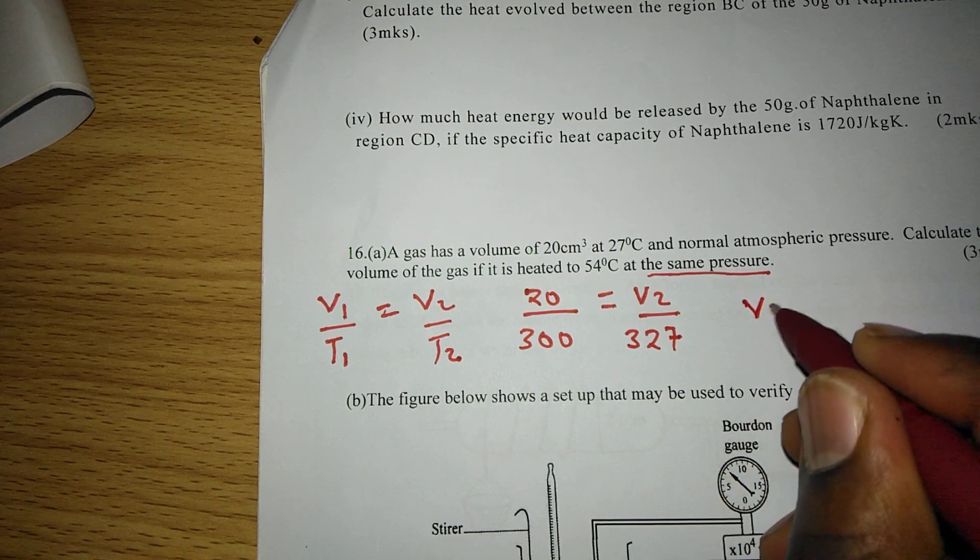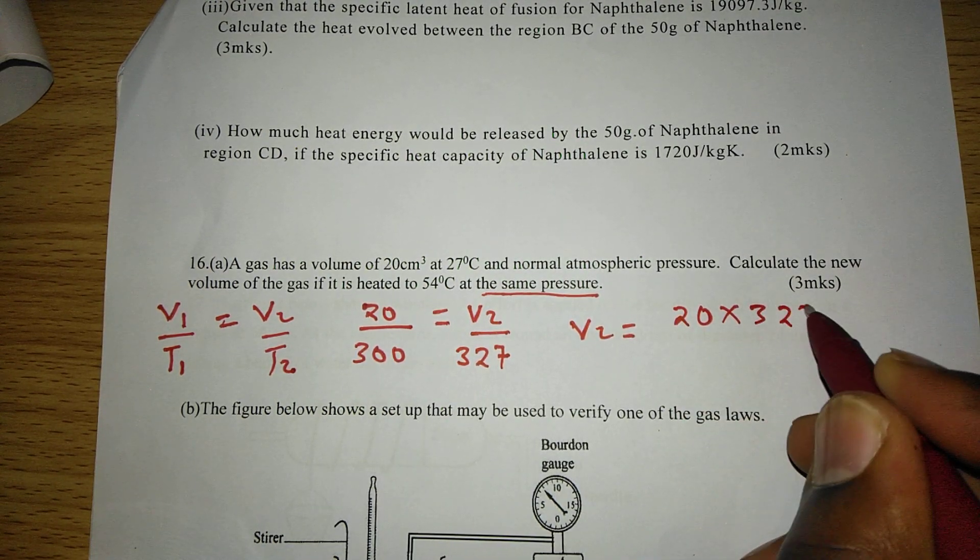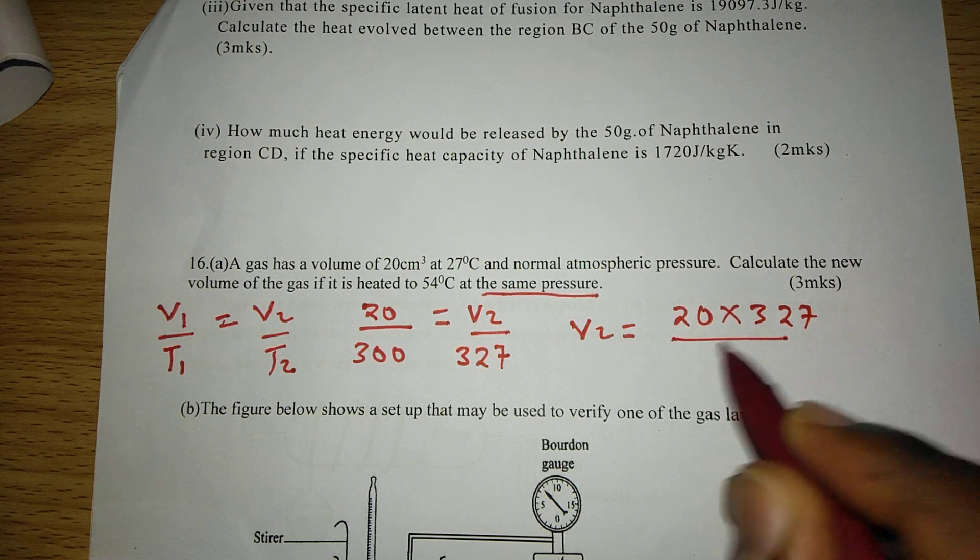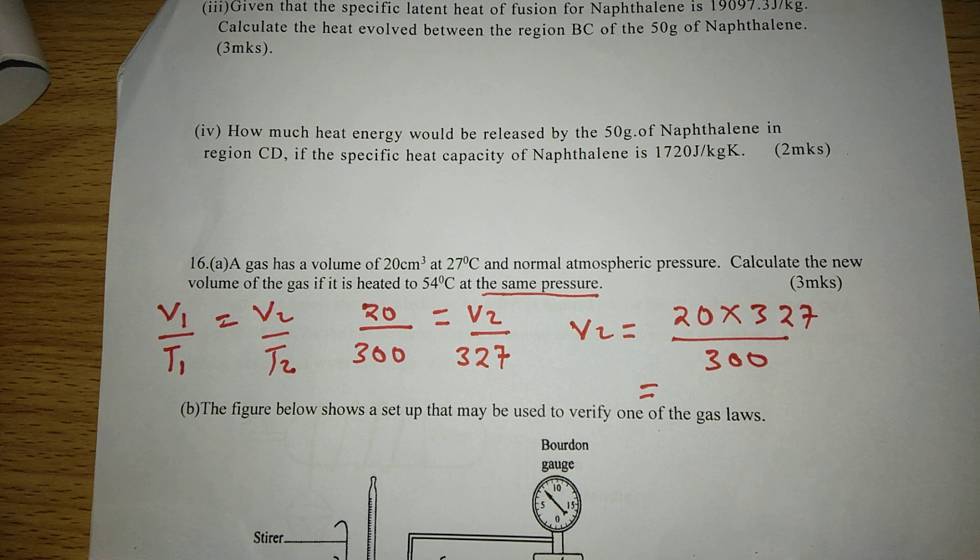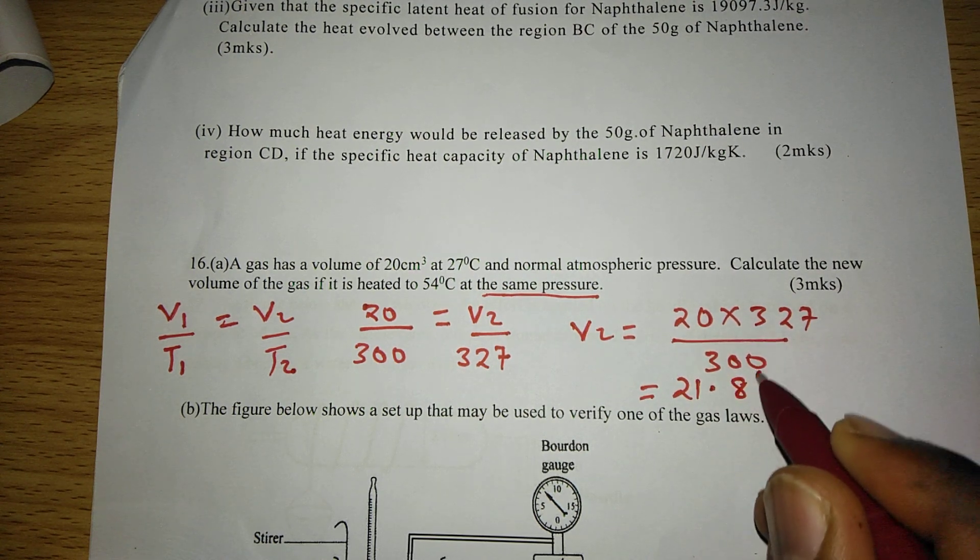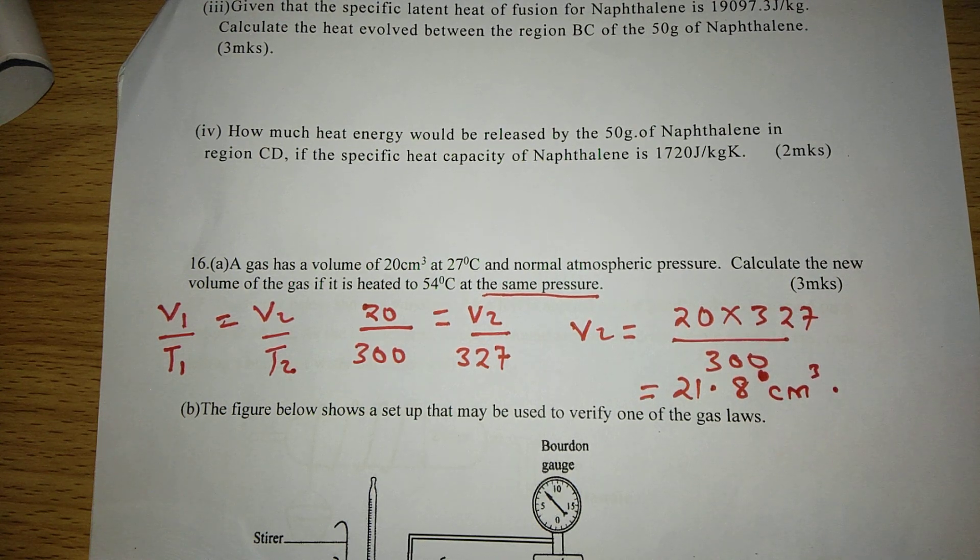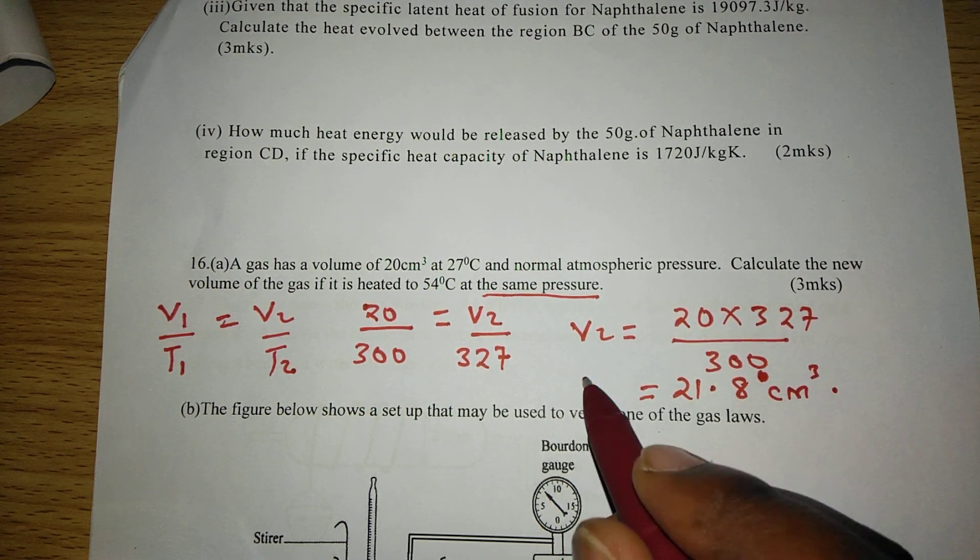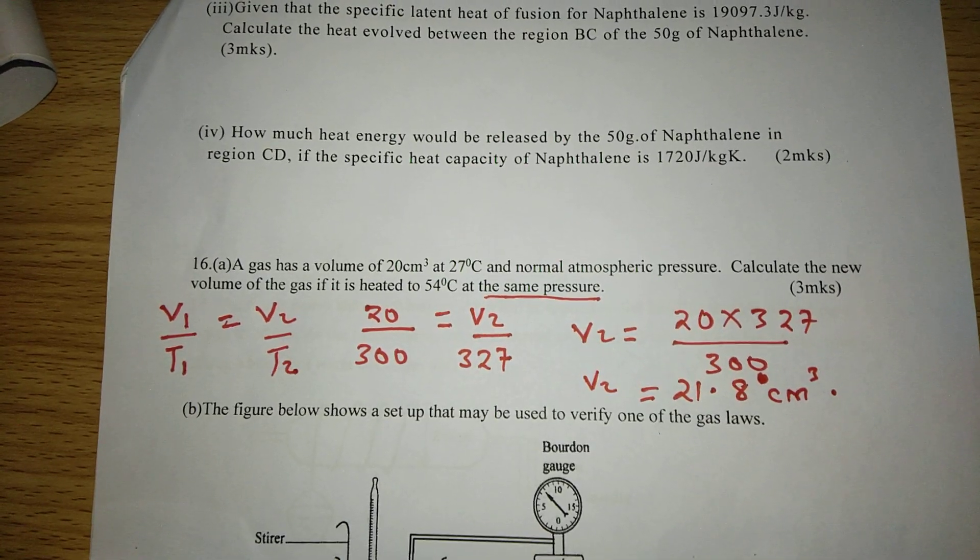So to remain with V2, then we have to multiply 20 by 327, then we divide by 300. So the new volume will be 21.8 cubic centimeters. Since temperature is increasing, volume has to increase according to Charles's law.